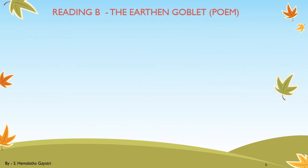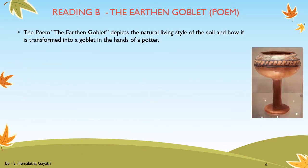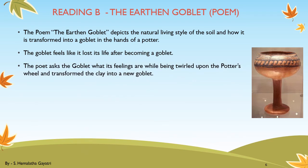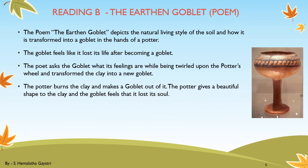I am going to give you the summary of this poem, The Earthen Goblet, and I request you all to read the poem given in your text first and then listen to the summary. The Earthen Goblet depicts the natural living style of the soil and how it gets transformed into a goblet in the hands of a potter. The goblet feels like it has lost its life after becoming a goblet. The poet asks the goblet what its feelings were after being twirled upon the potter's wheel and transformed from clay into a new form. The potter burns the clay and makes a goblet out of it, giving it a beautiful shape, but the goblet feels that it has lost its soul.